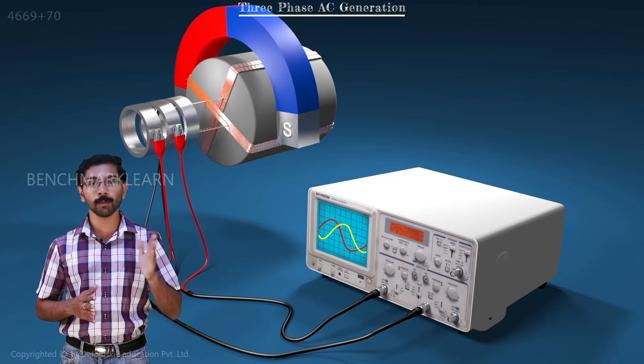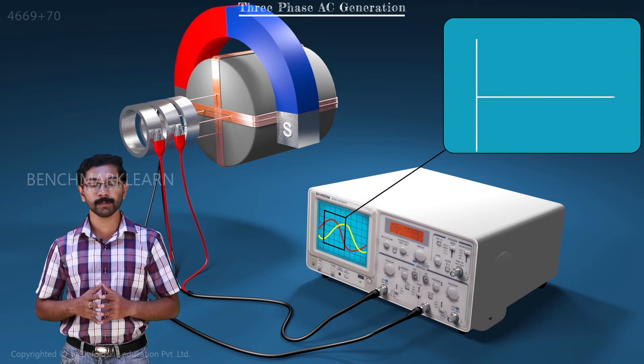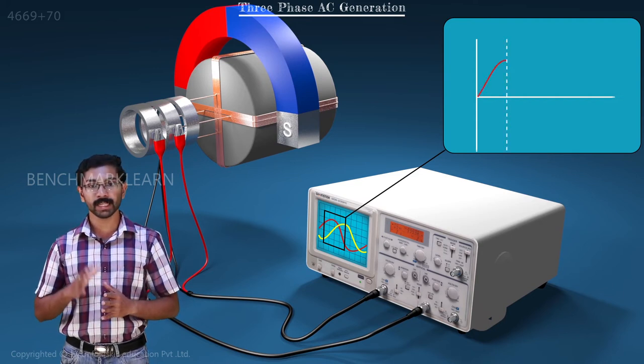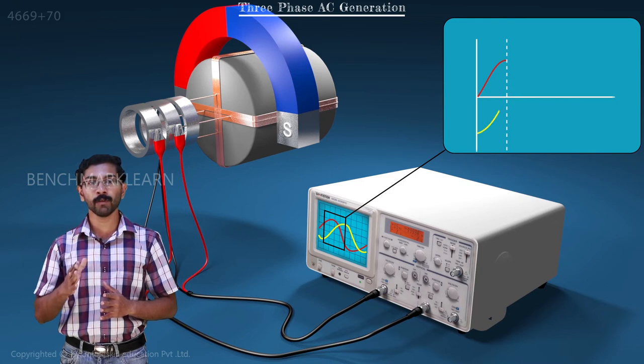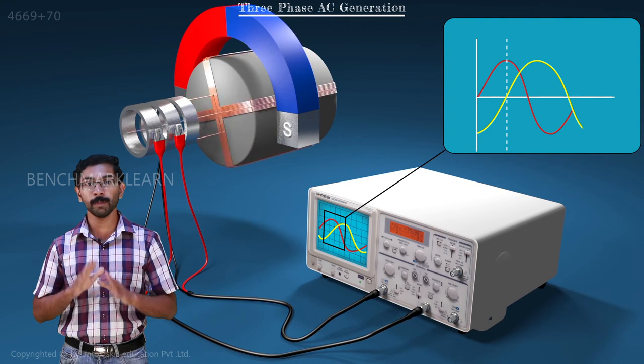When the first coil is at the bottom of the north pole, it will cut the maximum amount of flux and the EMF induced in it will be maximum. At the same time, the second coil will be midway between the poles. The flux cut by the coil will be zero.